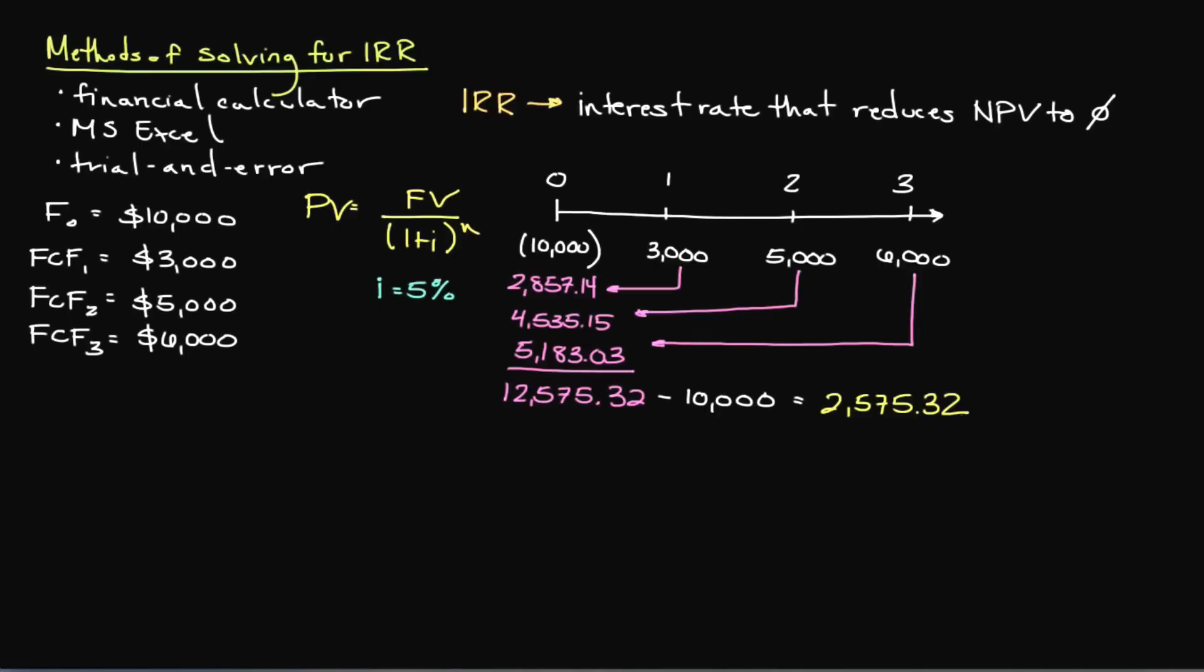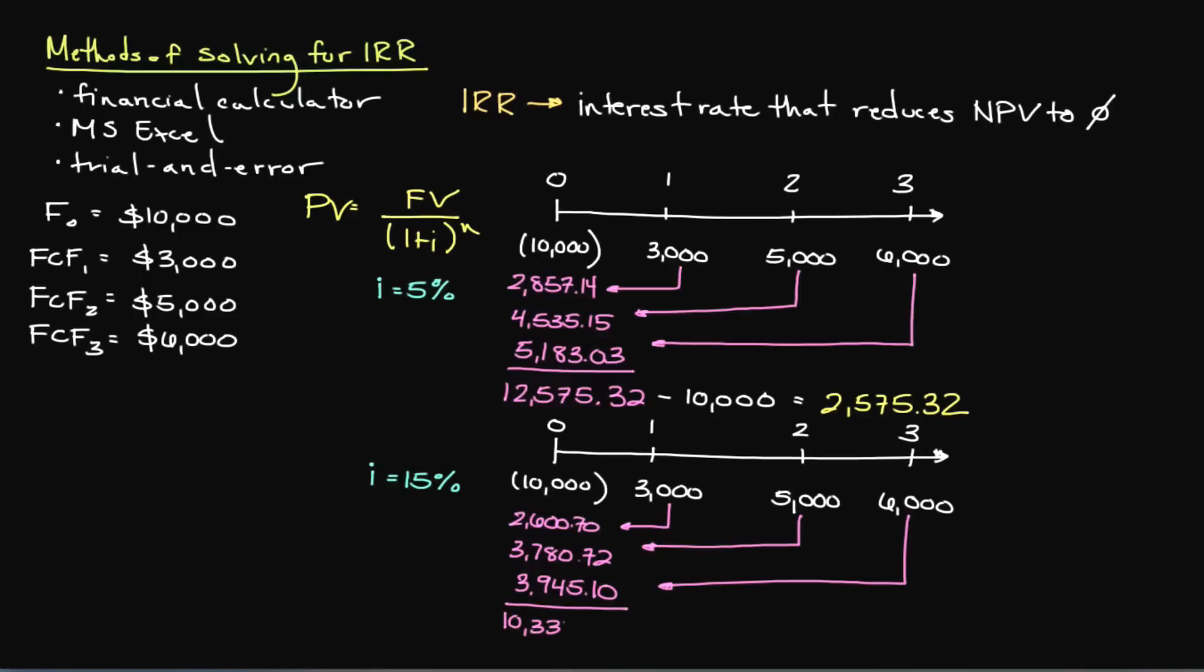Clearly, I was a ways off from determining the correct IRR, but that's okay because we need to complete the process one more time. Since our NPV is so far away from zero, let's select a higher interest rate, say 15%. Discounting each future cash flow by 15% should give us $2,600.70, $3,780.72, and $3,945.10 after rounding as we did before. Next, we'll add these three numbers together to get $10,334.52, and then subtract our initial investment of $10,000 to get $334.52.